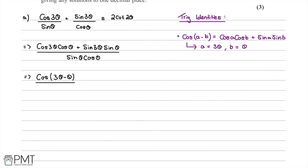We can tidy up the numerator: cos(3θ − θ) = cos(2θ), and the denominator remains sinθ cosθ.